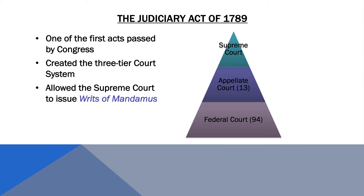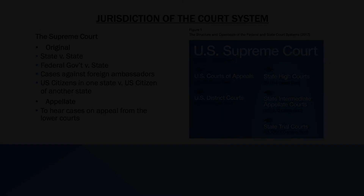The Judiciary Act of 1789 also allowed the Supreme Court the power to issue a writ of mandamus, which is basically an order issued by the Supreme Court requiring a government agency to carry out a legal duty. Remember, writ of mandamus is going to be important and will come back later in the lecture.